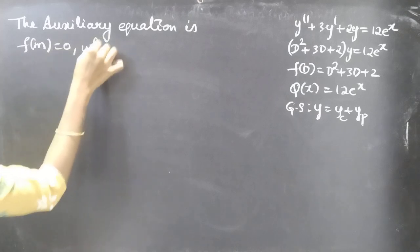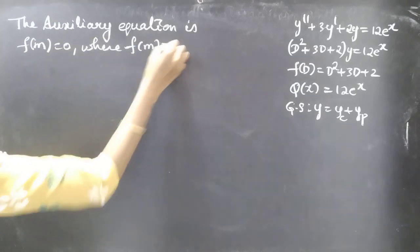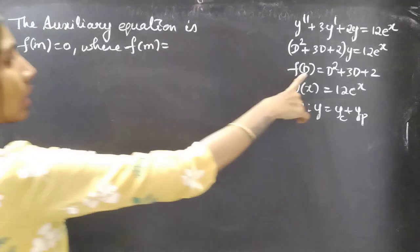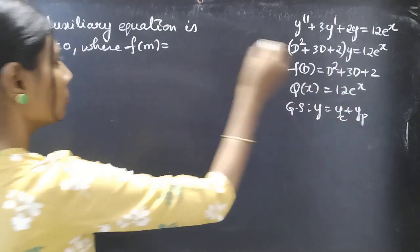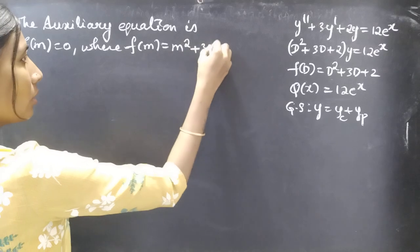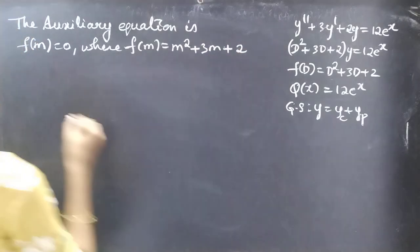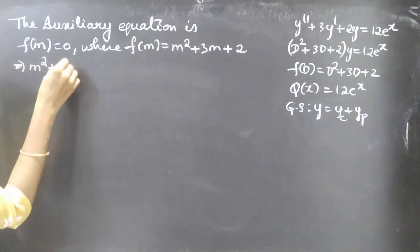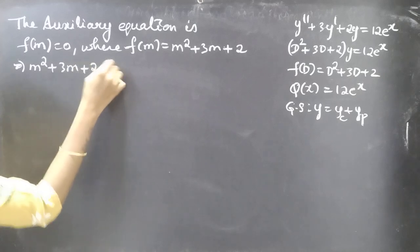Now coming to the auxiliary equation: f(m) = 0, where f(m) is obtained by replacing the differential operator D by m. So f(m) = m² + 3m + 2, and the auxiliary equation becomes m² + 3m + 2 = 0.